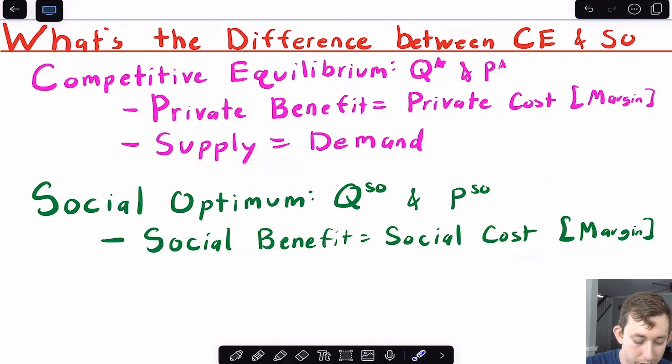And what we were really doing is setting the marginal benefit or the marginal private benefit equal to the marginal private cost.